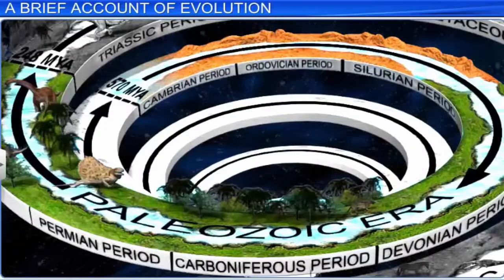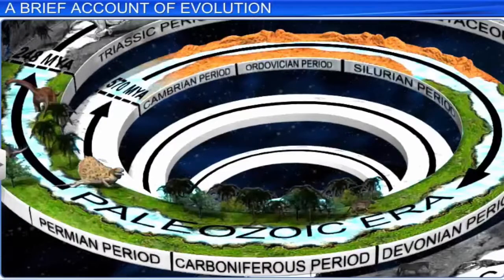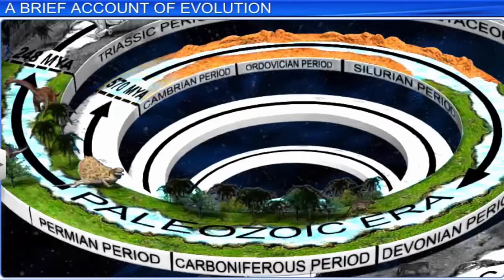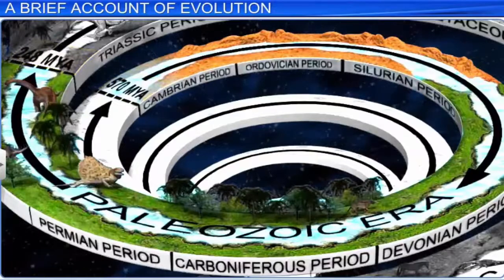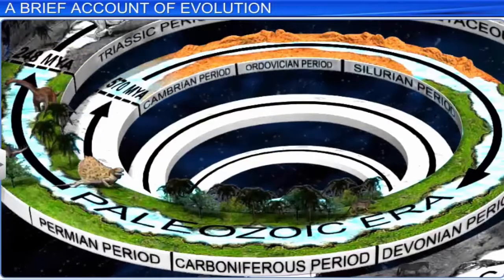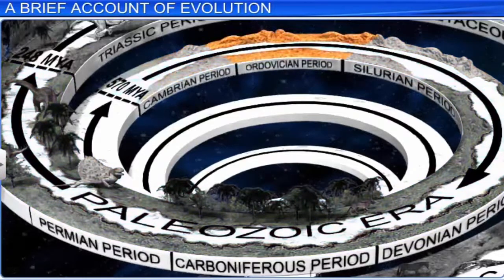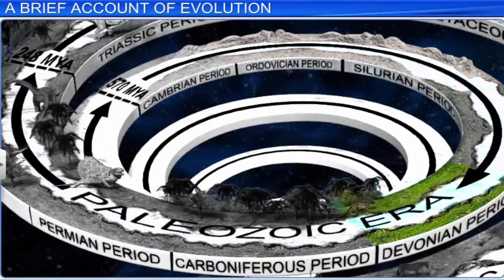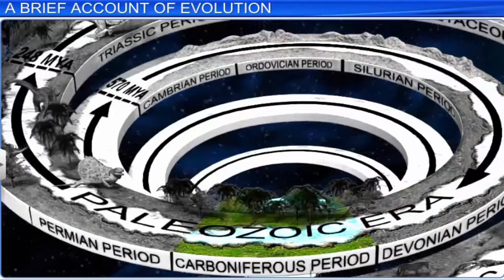The Paleozoic Era spans from around 540 or 570 million years ago to about 248 million years ago. It is divided into six periods: the Cambrian, Ordovician, Silurian, Devonian, Carboniferous, and Permian.